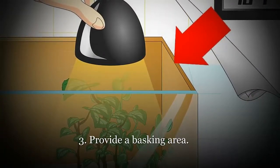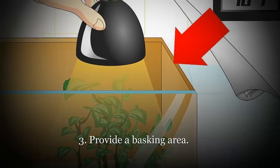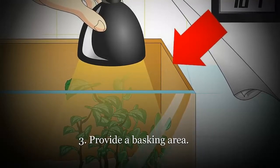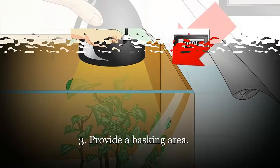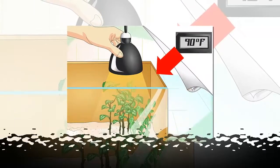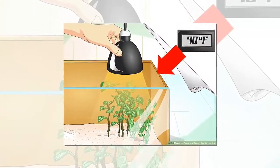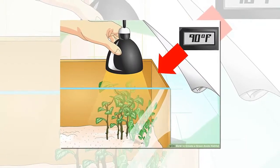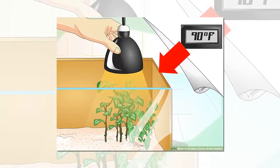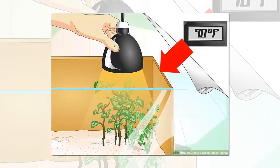Provide a basking area. You should provide an area within the tank that is kept at a higher temperature than the rest of the tank during the day. This is the basking area where your anole will relax during the day. You should keep this area at around 85 to 90 degrees Fahrenheit.